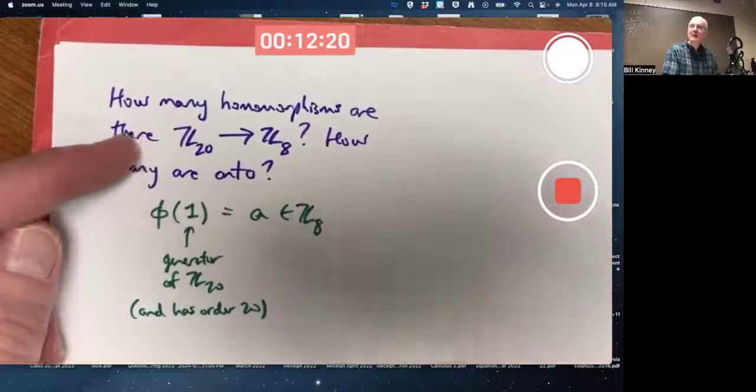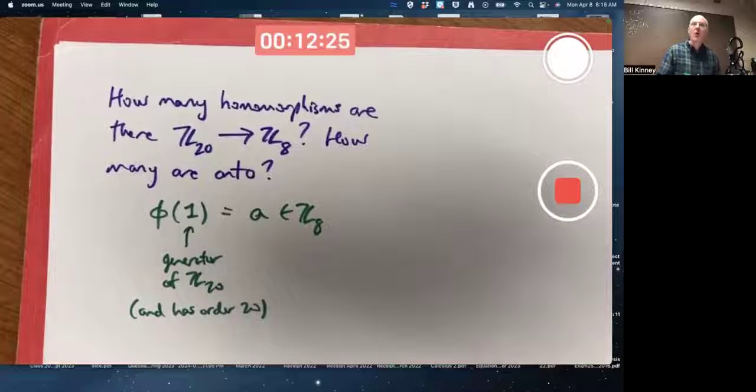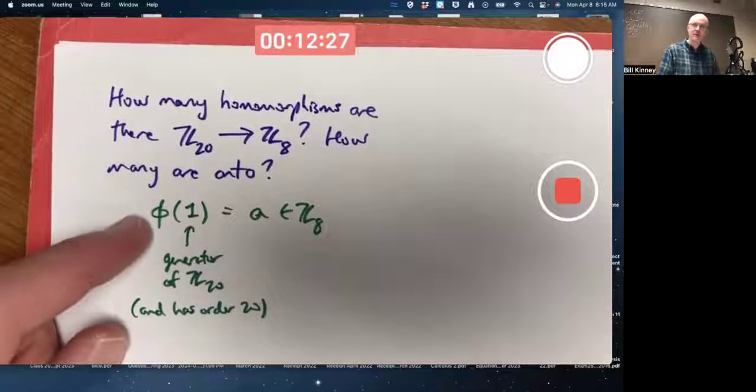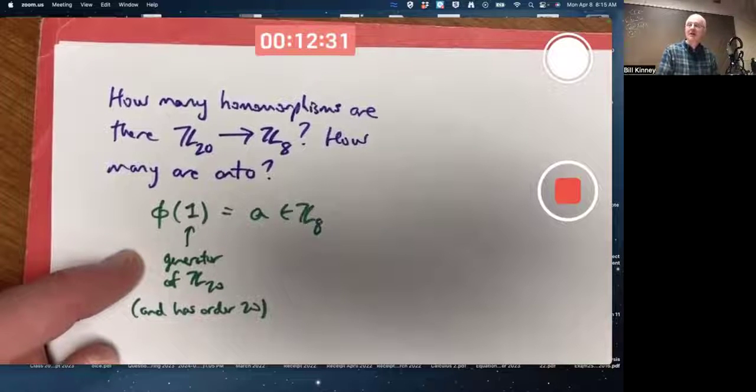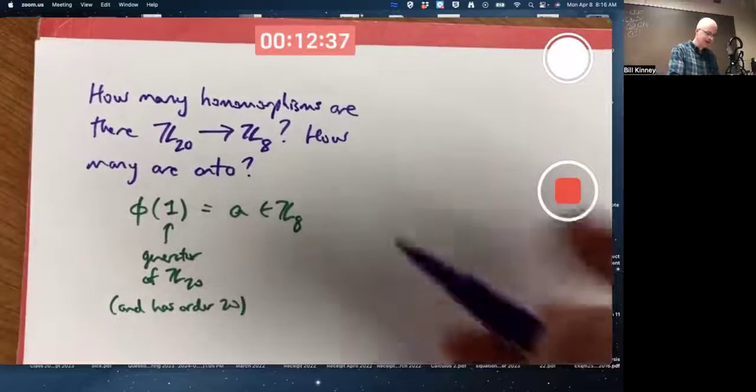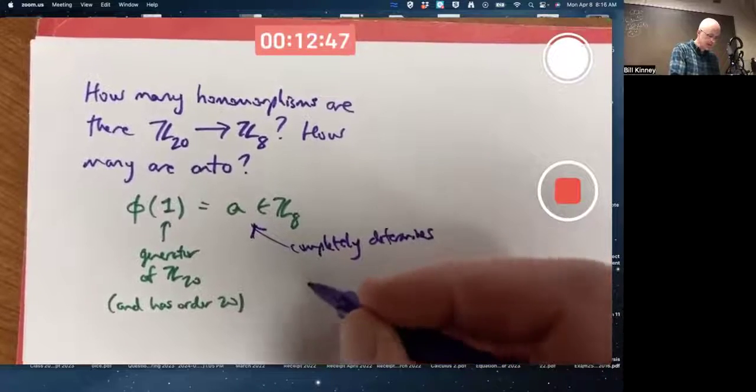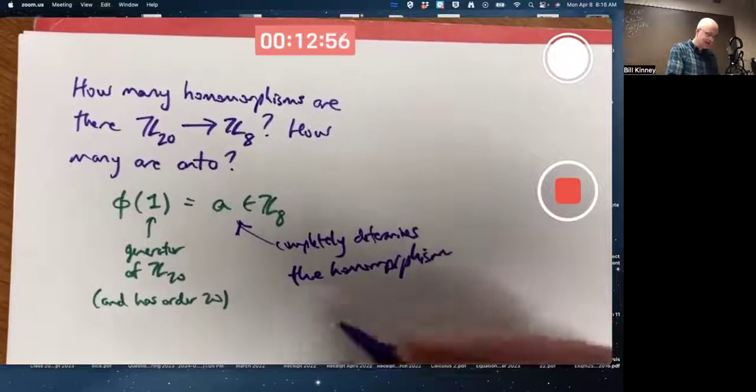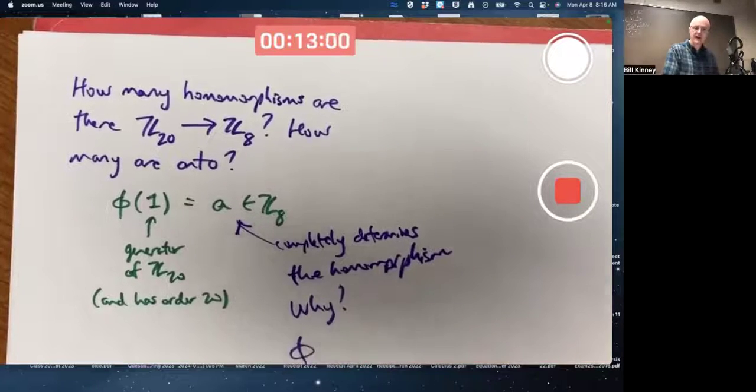But in relation to example 11, if you know what one gets mapped to as a generator of Z20, the domain, that determines what everything gets mapped to. Why? This completely determines the homomorphisms. Why?